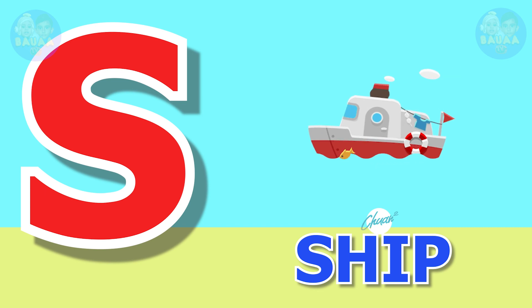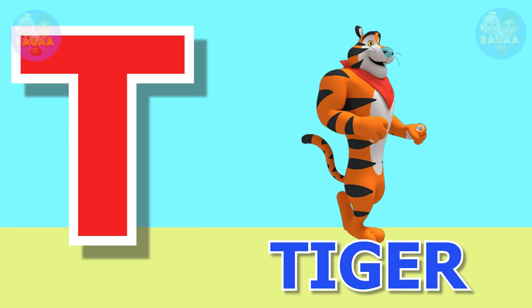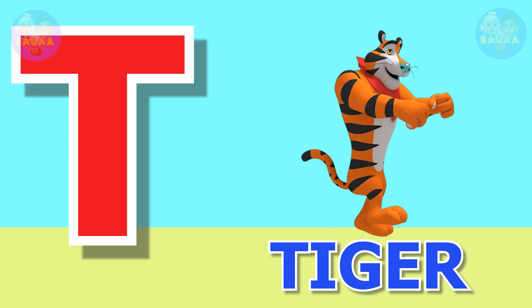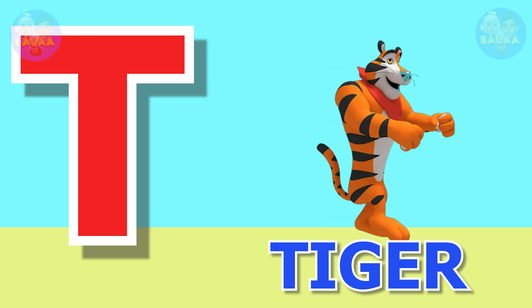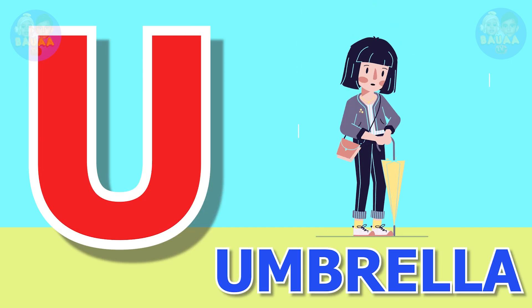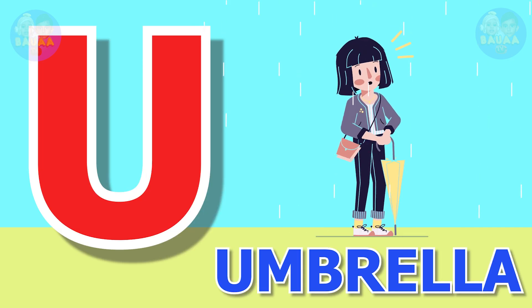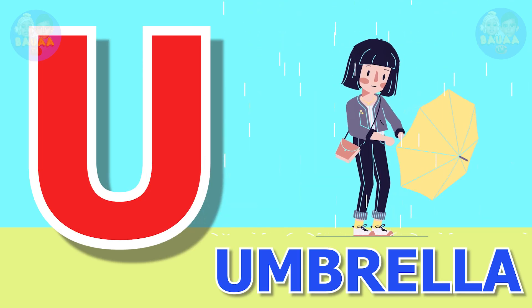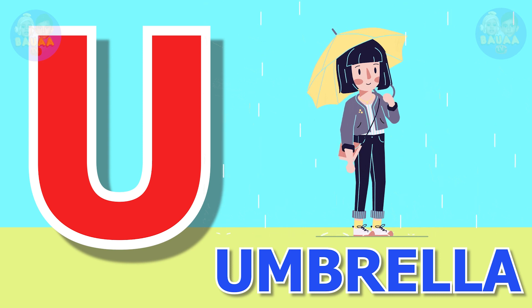S for sheep, sheep means jahaj. T for tiger, tiger means bar. U for umbrella, umbrella means chata.